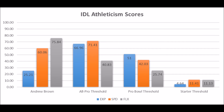When you get to his athleticism data, he had a good combine but not a great combine. He had a 25.21 explosive lower body strength score, a 60.06 speed score, and a 75.84 flexibility score. His dominant athleticism traits are speed and flexibility, or balance. He should be able to get from point A to point B faster than other defensive tackles, and he should be able to keep his feet and stay off the ground due to good core strength shown in his three-cone and short shuttle drills.